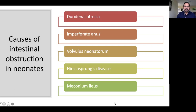In neonates, the first cause is duodenal atresia. Then we have imperforate anus, which should be checked with a thermometer immediately after birth — this is a mandatory examination. Volvulus neonatorum is another condition. Then Hirschsprung's disease and meconium ileus. Meconium ileus is associated with cystic fibrosis; the pancreatic enzymes are defective, causing the meconium to thicken and lead to obstruction.